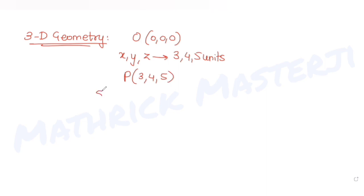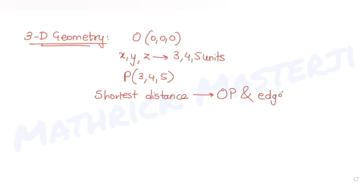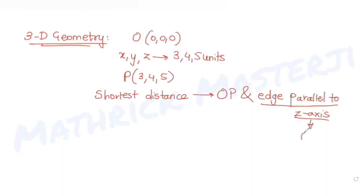Further, the question tells us P is the opposite vertex, and we have been asked to find the shortest possible distance between the diagonal OP and an edge parallel to the z-axis. The question also tells us the edge which is parallel to the z-axis should not pass through O or P.